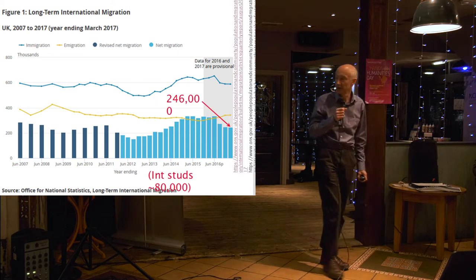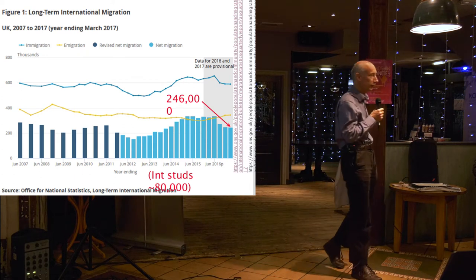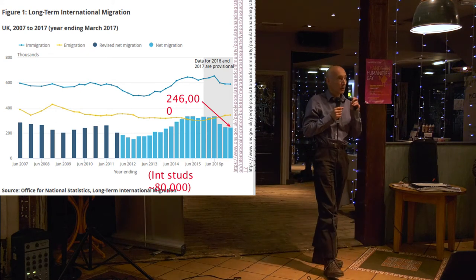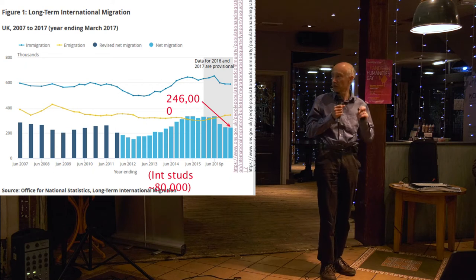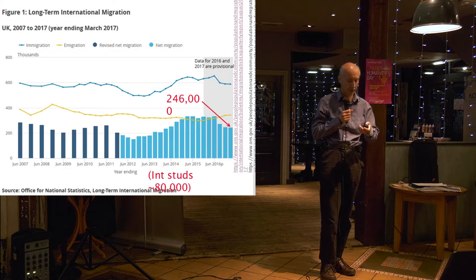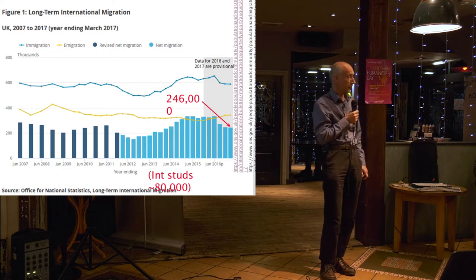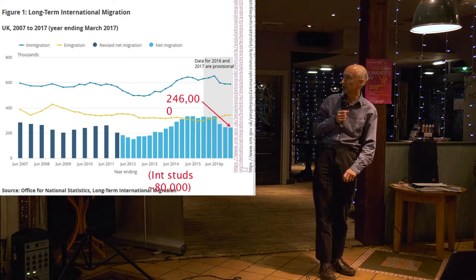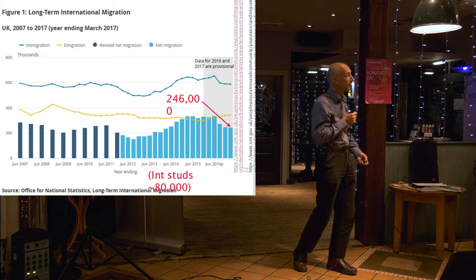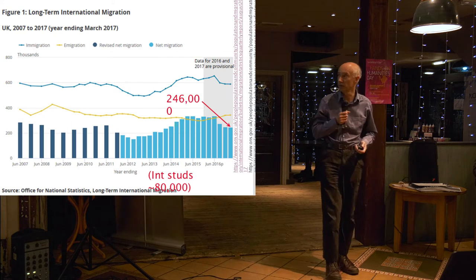The first thing to realise is that the magic number — 246,000 — is over on the right-hand side here. That was the best estimate from the last quarter of how many people had stayed in the UK over the last year, once we have taken the top line — people coming in — subtracted the yellow bottom line — people going out — and assumed that the remainder is the net addition to the population from international migration.